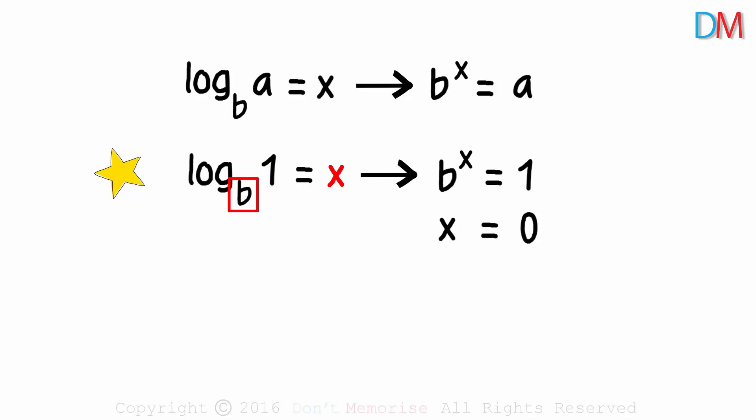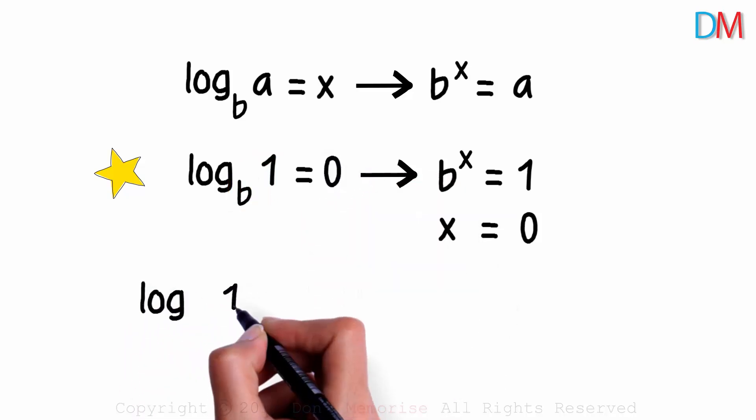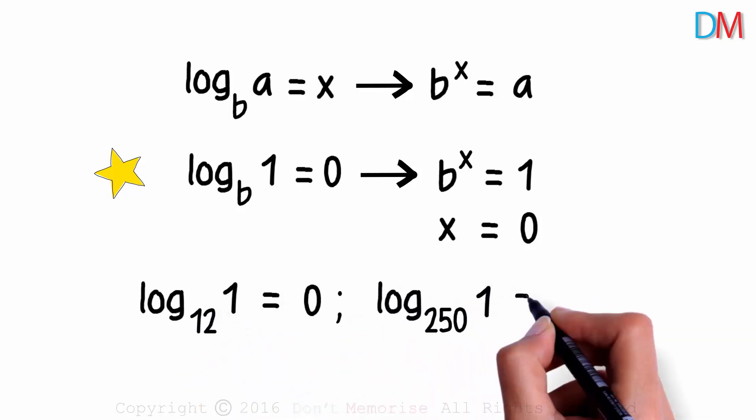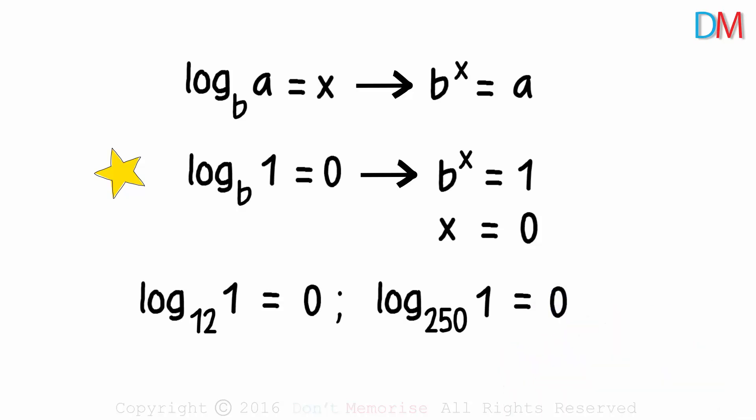The log of 1 to any base will always equal 0. Log of 1 to the base 12 is equal to 0. Log of 1 to the base 250 is also equal to 0. That was the first fundamental property we looked at. Log of 1 to any base will always equal 0.